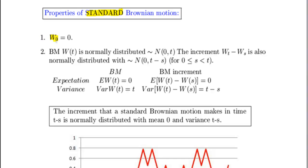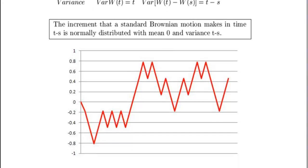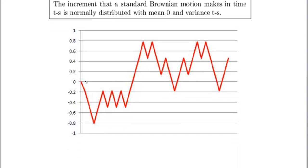Standard Brownian motion is here denoted as W indexed with time, so W at time 0 equals 0. What this means is that our Brownian motion at time equals 0 takes the value of 0. Looking at the graph here, I've got a realisation of my Brownian motion path — this is just one realisation, but one thing that all realisations of Brownian motion will have is that they will take a value of 0 at time equals 0.